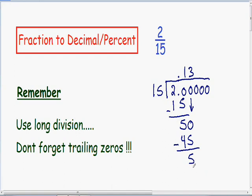Once again we have a remainder so we need to keep on going. So I'll bring down my next zero. 15 goes into 50 three times. 3 times 15 is 45. And once again if we subtract we have another remainder of 5.